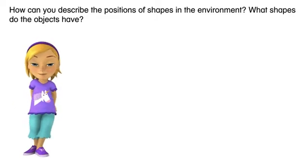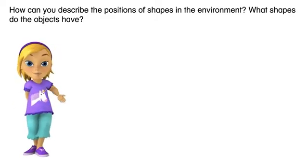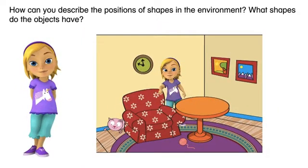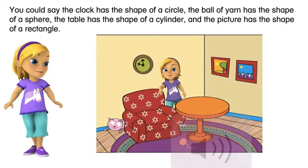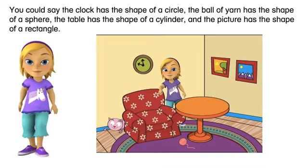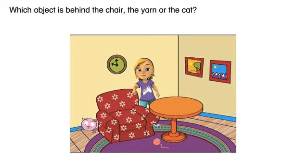How can you describe the positions of shapes in the environment? Let's find out. What shapes do the objects have? You could say the clock has the shape of a circle, the ball of yarn has the shape of a sphere, the table has the shape of a cylinder, and the picture has the shape of a rectangle.